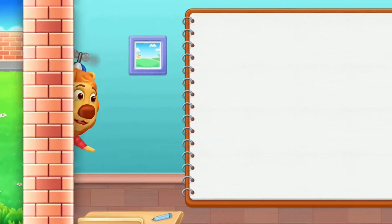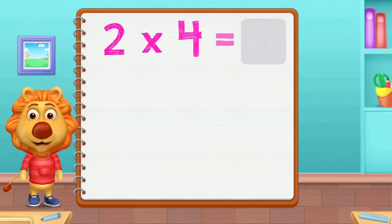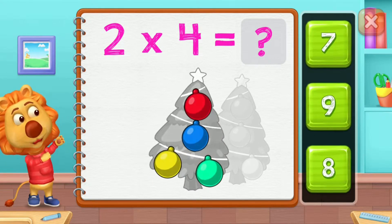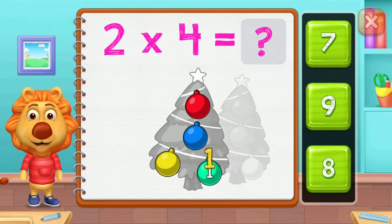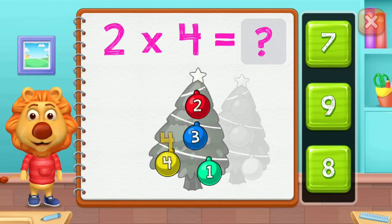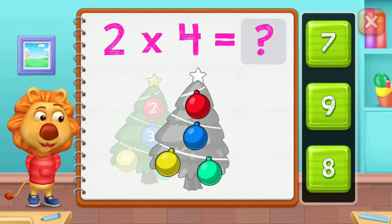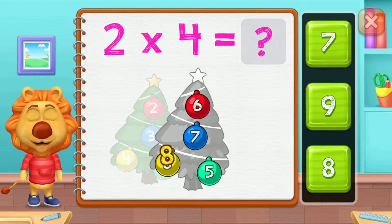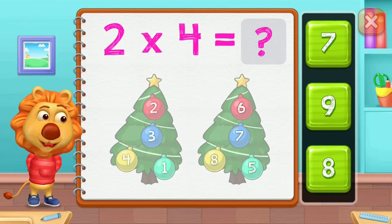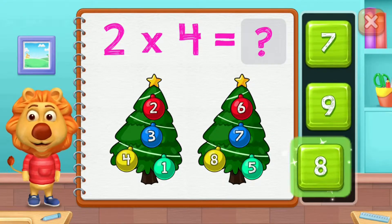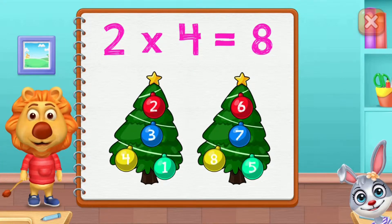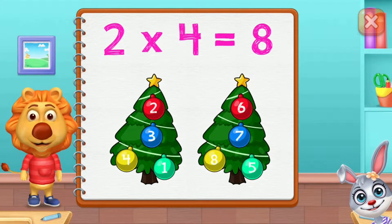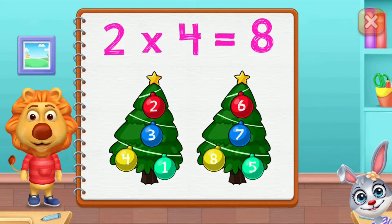1, 2, 3, 4, 5, 6, 7, 8. Two groups of four equals eight.